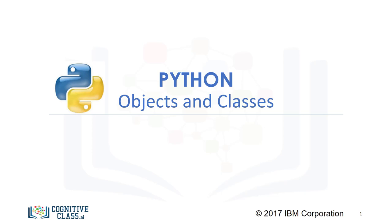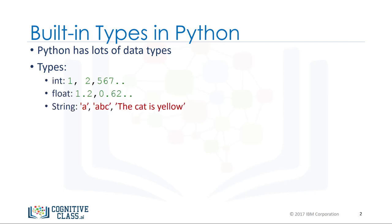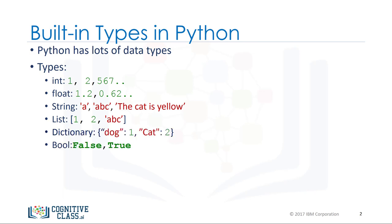In this module we are going to talk about objects and classes. Python has many different kinds of data types: integers, floats, strings, lists, dictionaries, booleans.